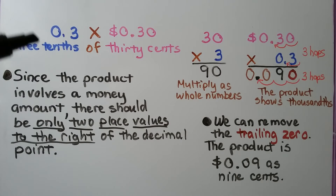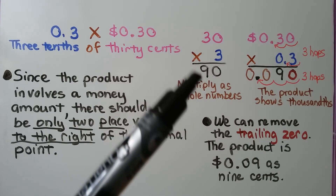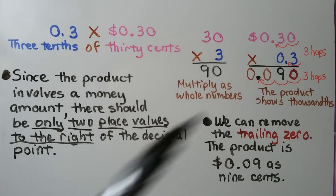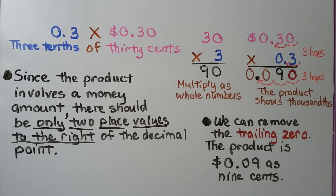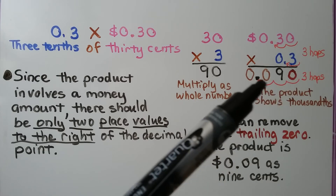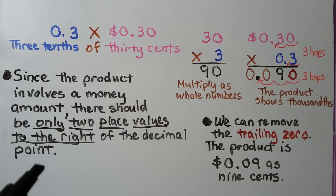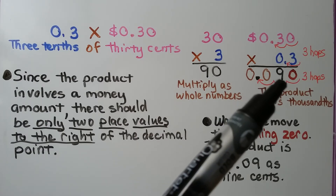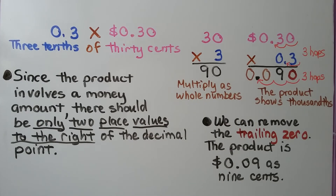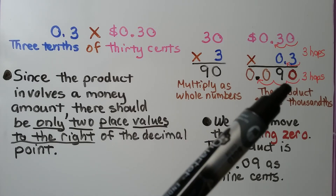In this equation we have 3 tenths times 30 cents — that's 3 tenths of 30 cents. We multiply just as if they were whole numbers: 3 times 30 is 90. We count the decimal place value hops in the factors — there are 3 of them, so there's going to be 3 decimal place value hops in the product. Since the product involves a money amount, there should only be 2 place values to the right of the decimal point. That means we have a 0 and a 9, and we can remove the trailing 0. The product is 9 cents.